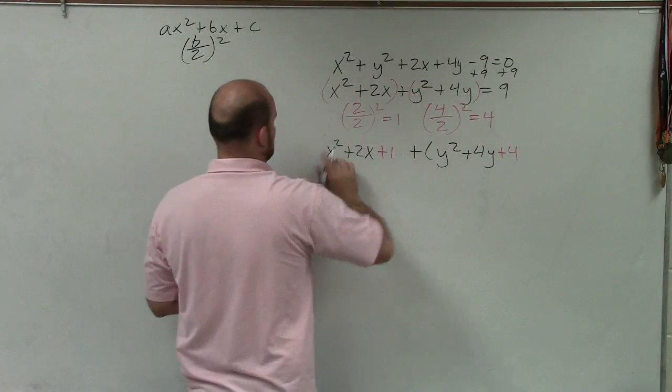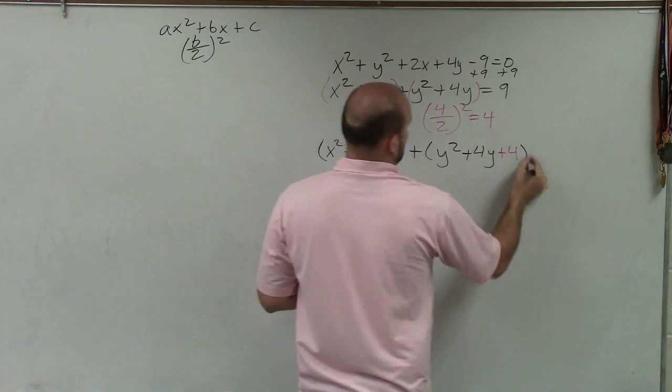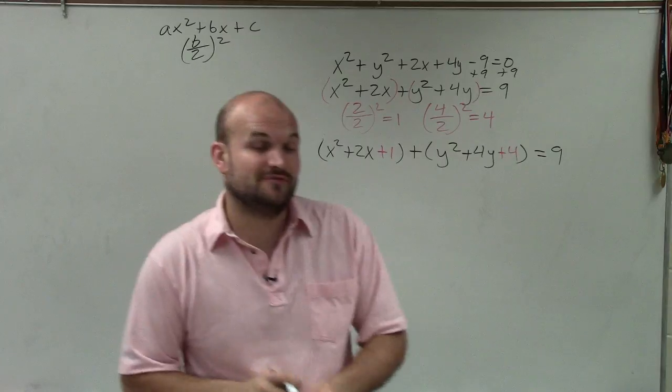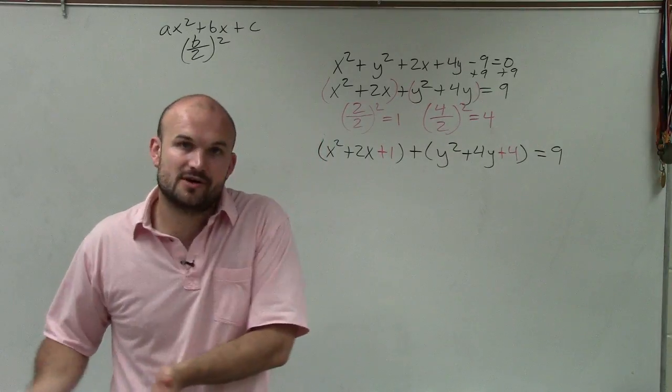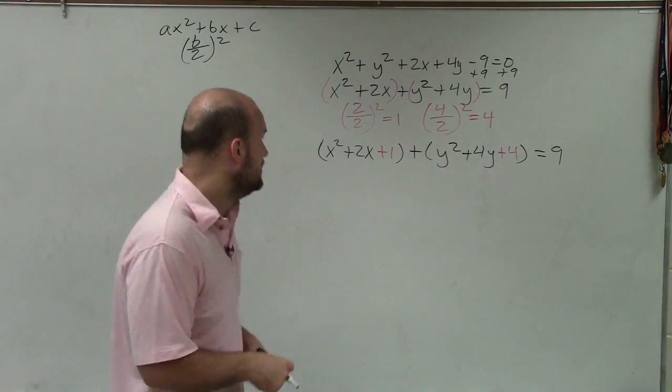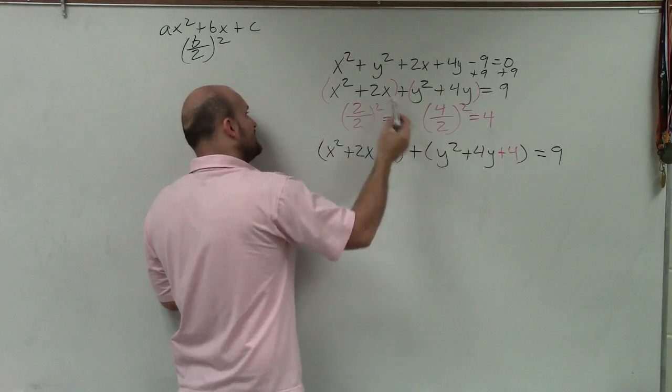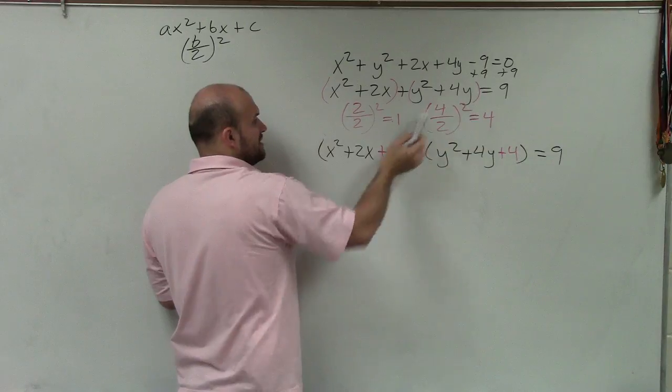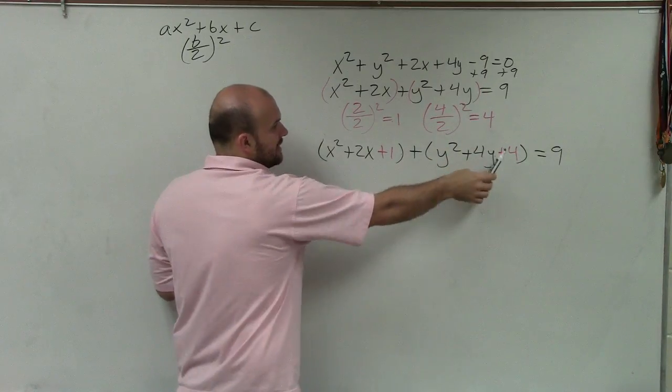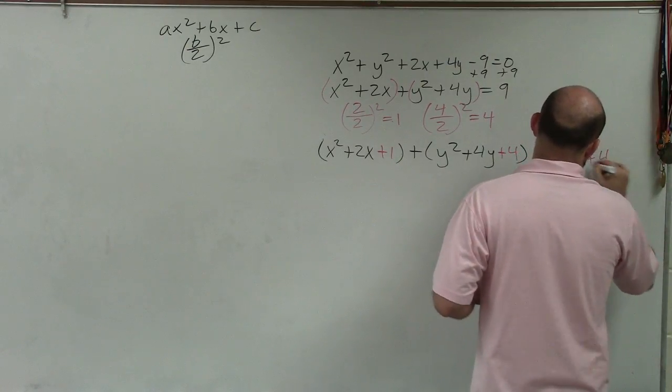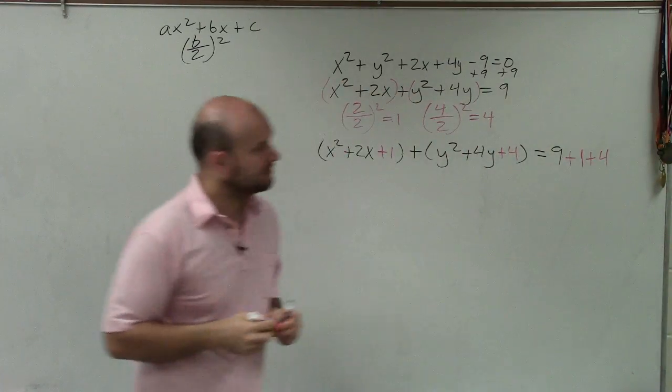Actually, I kind of like dark parentheses equals 9. Now remember, going back to your equations, if you add something on one side of the equation, you've got to add it on the other side of the equation, right? Addition property of equality. So you can see that whenever I found these values of 1 and 4, I added them into the parentheses, into each one of these parentheses. So I added 1 and I added 4. Therefore, I need to add 1 and I need to add 4 to the other side.